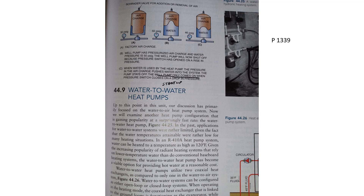On page 1339 there's a good explanation of water-to-water heat pumps. They use a well, and the key point is in paragraph C: when water is used by the heat pump, the pressure in the air charge pushes water into the system and the pump stays off. The well pump only comes on when the pressure switch closes on a drop in pressure. So on startup, what does not automatically turn on? The well pump.